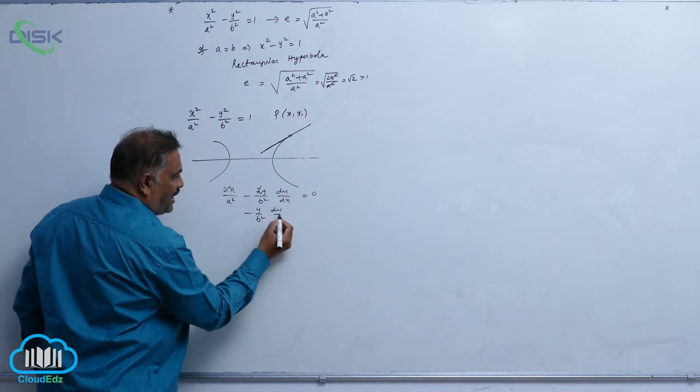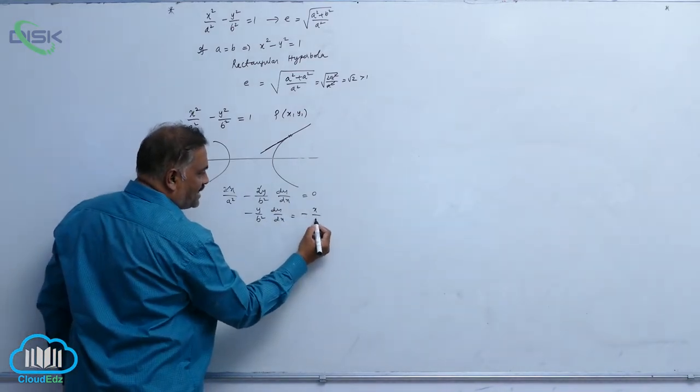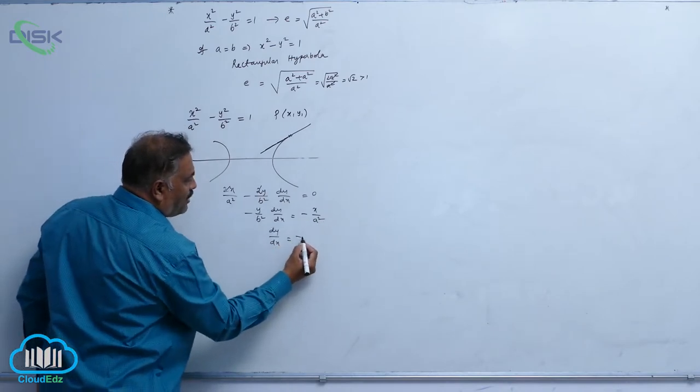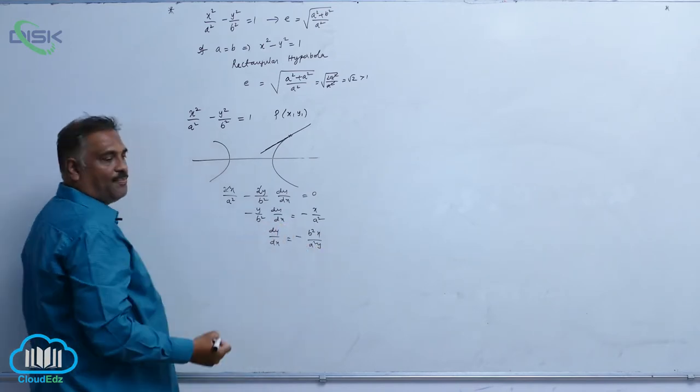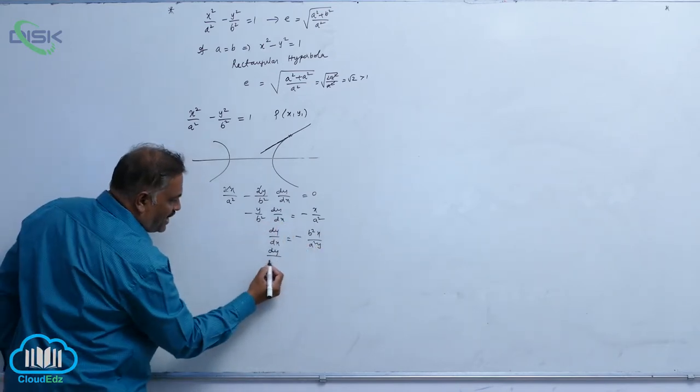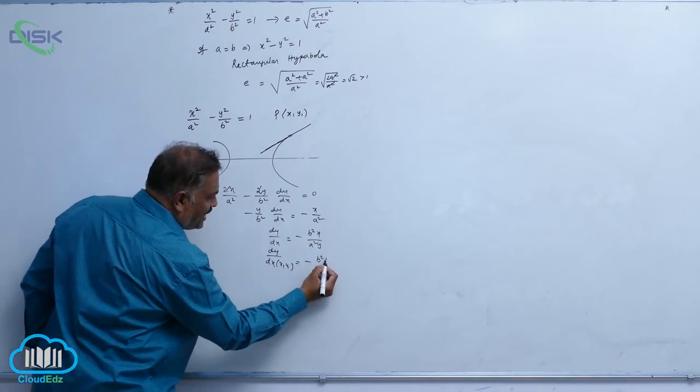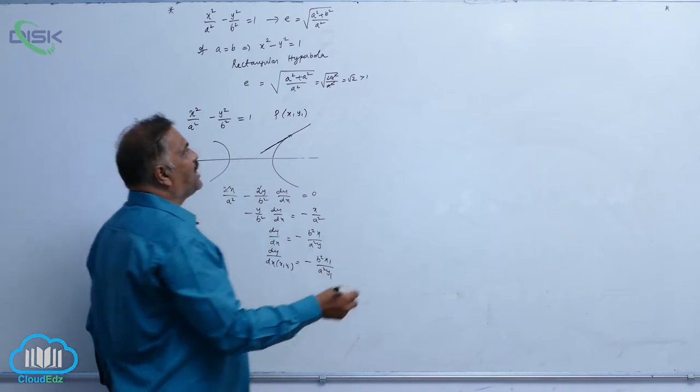Minus y by b square, dy by dx is equal to minus x by a square. So dy by dx is equal to minus b square x by a square y. dy by dx at x1 comma y1 is given by minus b square x1 by a square y1.